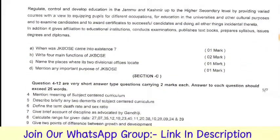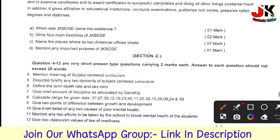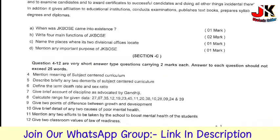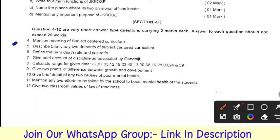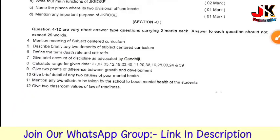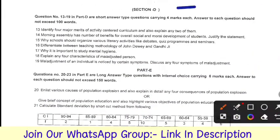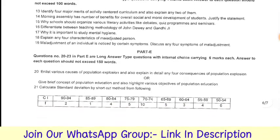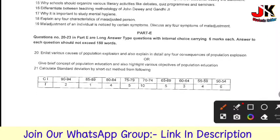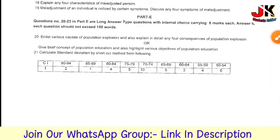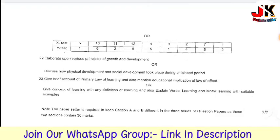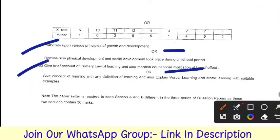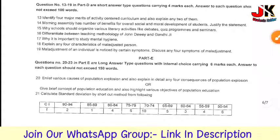Here you can see it clearly. Section C — Question No. 4 to Question No. 12, with 2 marks each. This is your model paper showing the pattern of your question paper. Section D — Question No. 13, 14, 15, 16, 17, 18, 19. Then Part E — Question No. 20, 21, and 22. This was your education model paper.